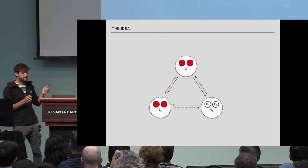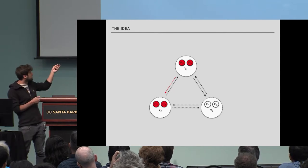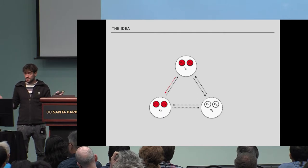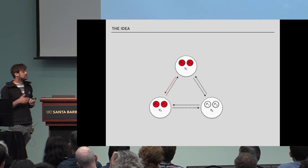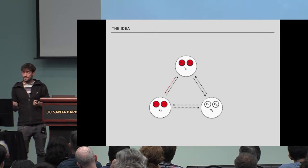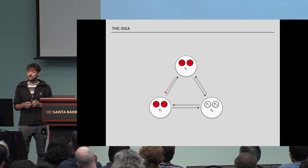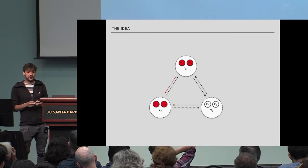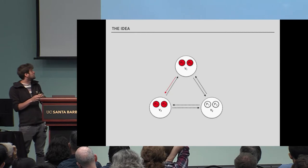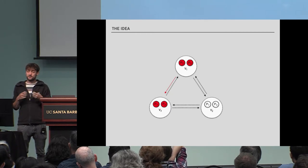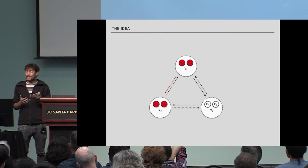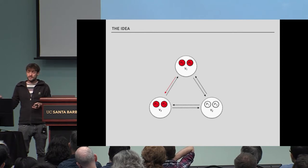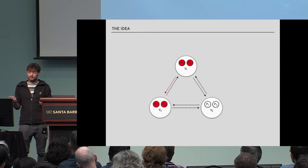This idea also generalizes — there is no reason it needs to be three parties; it can be an n-party protocol. You can also increase the number of corruptions you can handle. The main point is that every virtual party contains one honest party. So for example, if you want security against five active corruptions, every virtual party will be simulated by six parties, which means if any or all of them misbehave, there will be at least one honest party that sends the correct message.